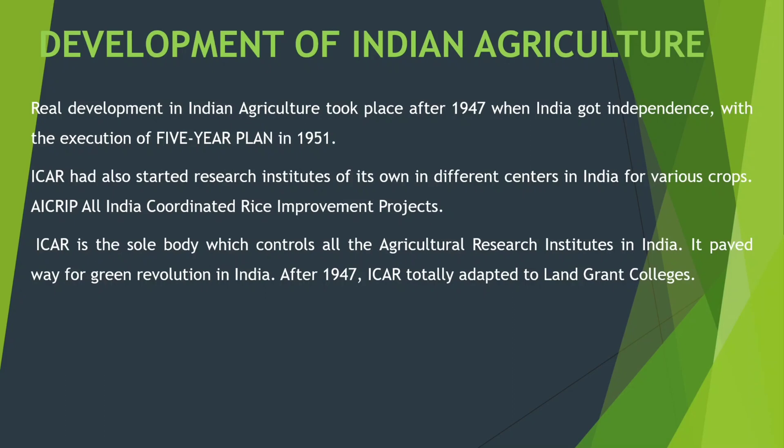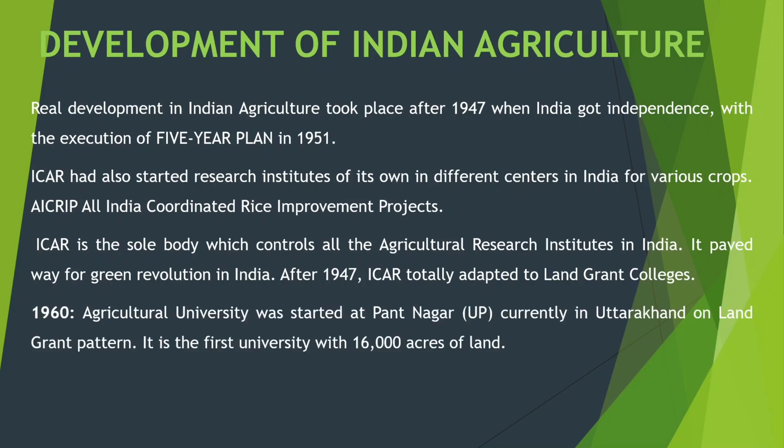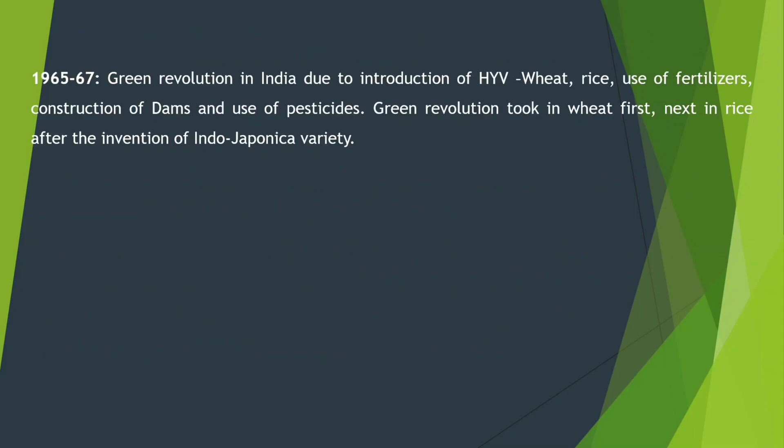After 1947, India adopted the land grant college model. In 1960, an Agricultural University was started at Pantnagar — the first land grant university — with 16,000 acres of land. The first agriculture university was formally founded in 1965-67.